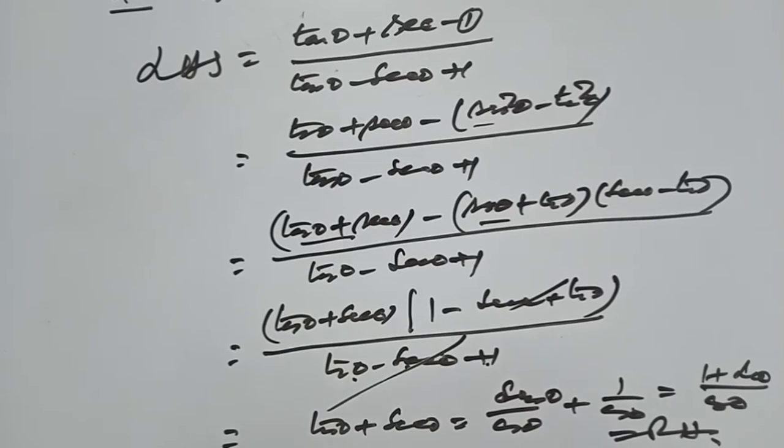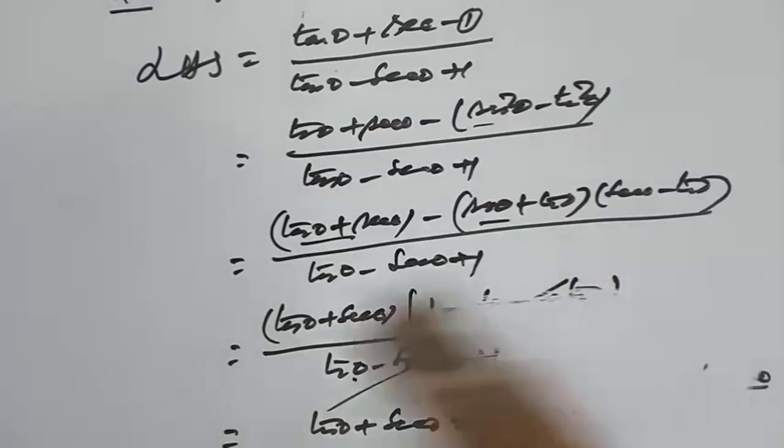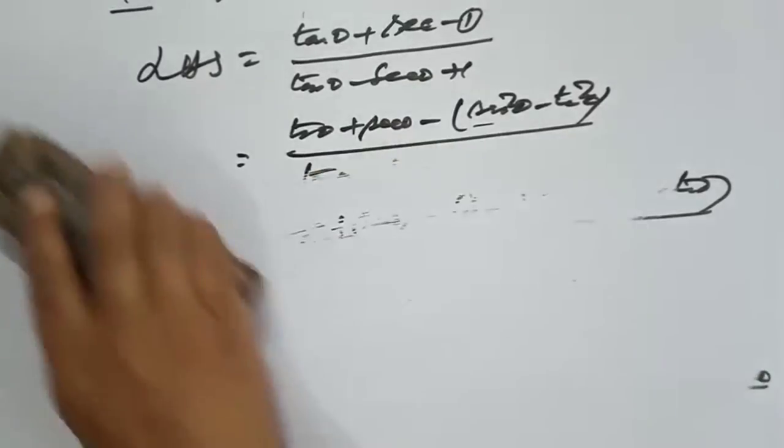We have been able to prove all the six identities and problems. This is enough for this section. Next time we will take more questions. Thank you.